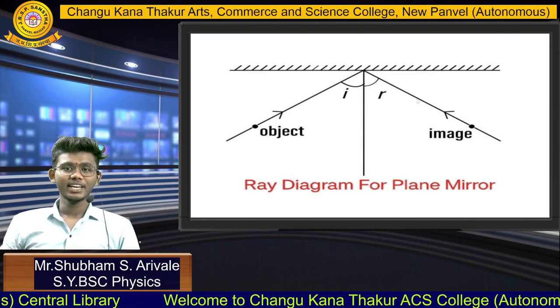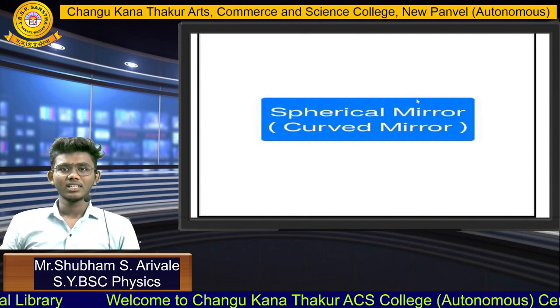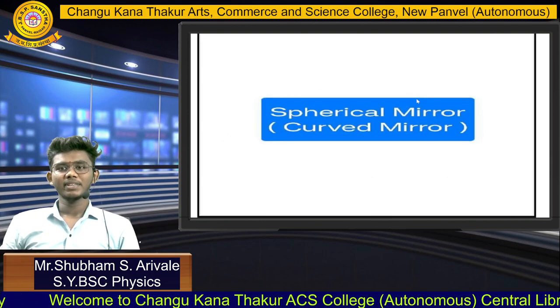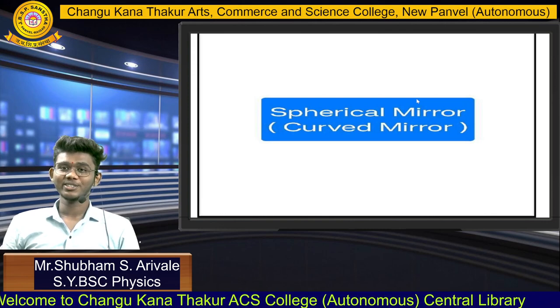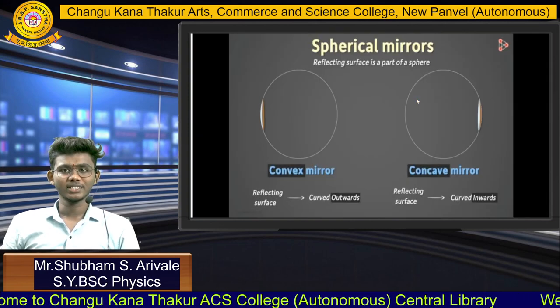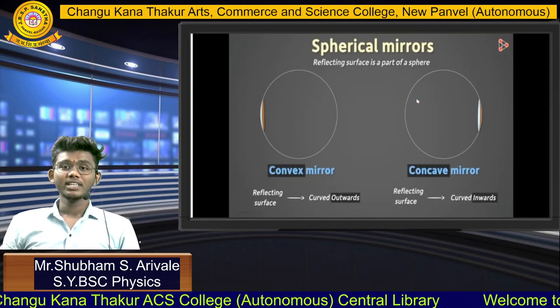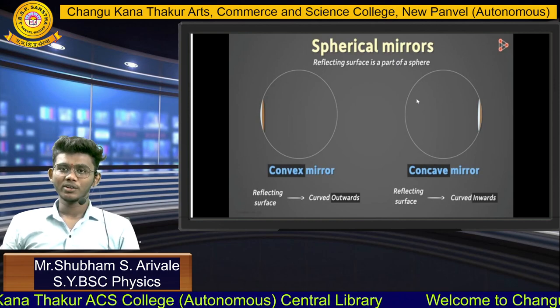Simple ray diagram for a Plane Mirror. The second type of mirror is Spherical Mirror, also called Curve Mirror. Spherical Mirror has two types: Convex Mirror and Concave Mirror.